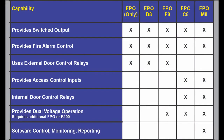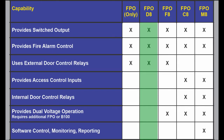The next combination is the FPO D8. This would be used where you have multiple doors and the access system also provides the door control relays. In a typical 16-door system where 14 of them are strikes, two of them are mag locks, all are 24 volts, I would use an FPO with two D8s.